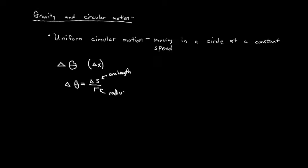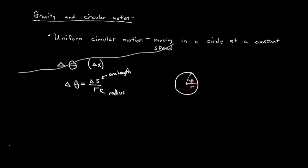Theta specifically relates to moving in a circle, so let's draw a circle. Every circle has a radius — that's the distance from the center to the edge. If we rotate through some angle, we call that theta — it's the angular change in position. Moving along the outside of the circle, along the circumference, traces an arc. That arc length is s, and change in theta equals arc length divided by radius.